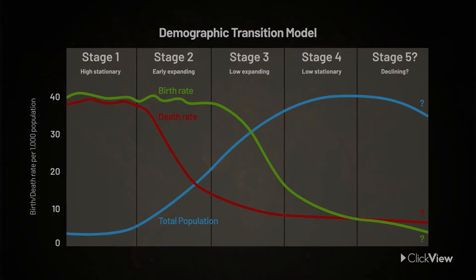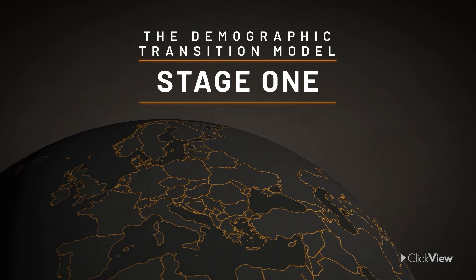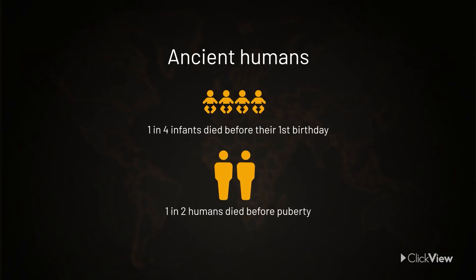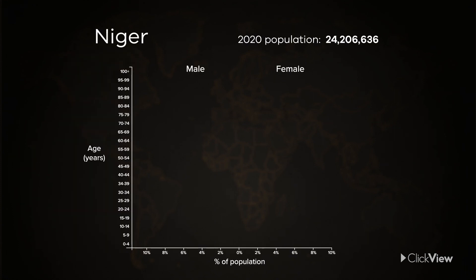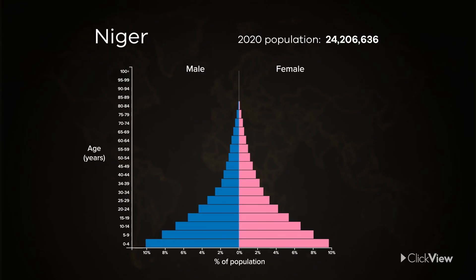Let's break these stages down in more detail. What we know of ancient humans tells us that around one in four infants died before their first birthday, and as many as half of all humans died before puberty. With such a high mortality rate, populations needed high birth rates just to survive. Demographers refer to this balance as stage one of the demographic transition model. Relatively equal rates of births and deaths means the population size is generally stable. A population pyramid for this stage would have a wide base and a narrow top. While some regions today could arguably be described as stage one, most demographers see it as a stage in our past. For many countries, it began changing during the Industrial Revolution in the late 18th century.